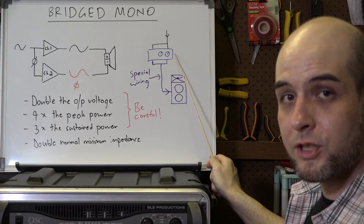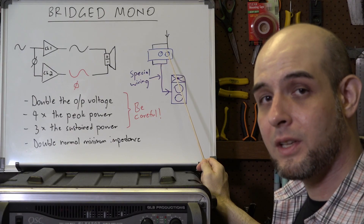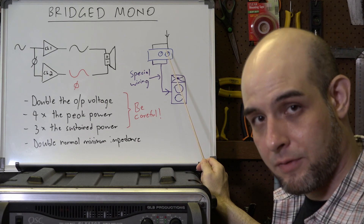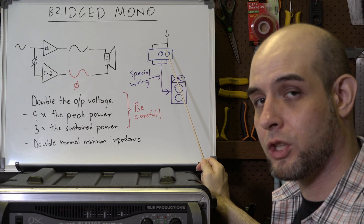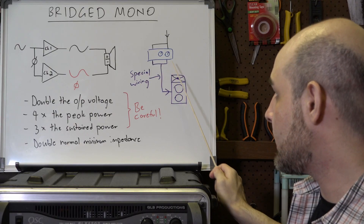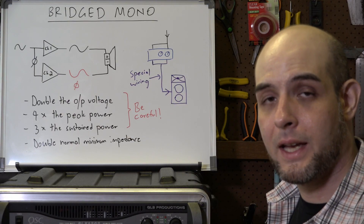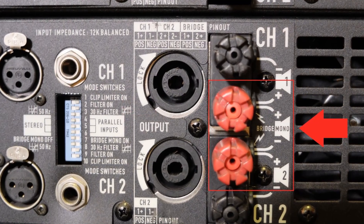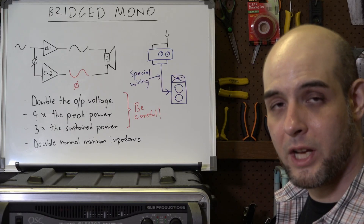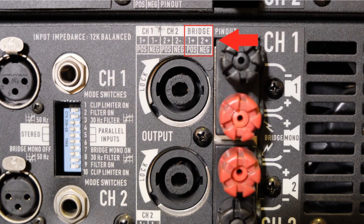To hook this up in practice, you run a full range signal to the input of the amplifier. In some amplifiers you can use either channel; in others, it specifies that you use channel one's input and level control, with channel two's input not used and its level control turned all the way down. The wiring between the amplifier and the loudspeaker is proprietary — typically if the amplifier has binding posts, you connect to the two red binding posts, and if it has Speakon connectors, the usual arrangement is plus one and plus two on the channel one Speakon.